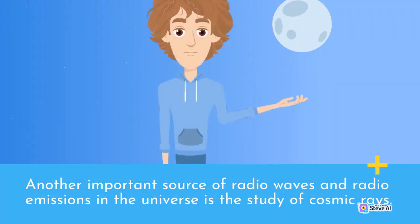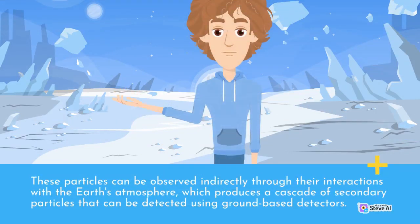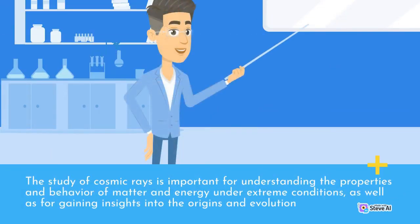Another important source of radio waves and radio emissions in the universe is the study of cosmic rays. Cosmic rays are high-energy particles that originate from sources outside our solar system, such as supernova explosions and active galactic nuclei. These particles can be observed indirectly through their interactions with the Earth's atmosphere, which produces a cascade of secondary particles that can be detected using ground-based detectors. The study of cosmic rays is important for understanding the properties and behavior of matter and energy under extreme conditions, as well as for gaining insights into the origins and evolution of the universe.